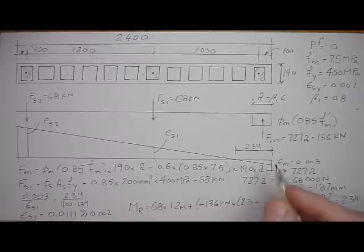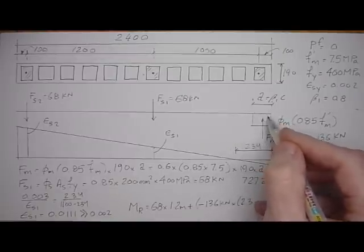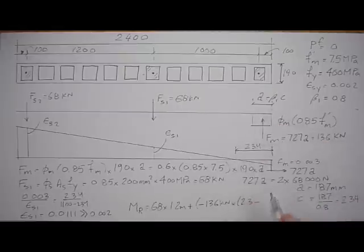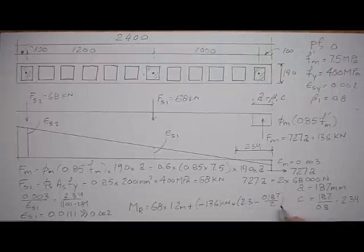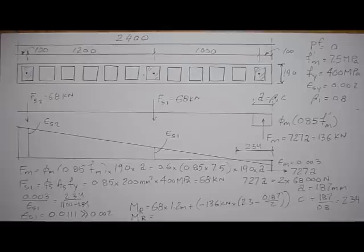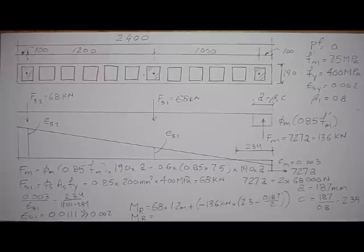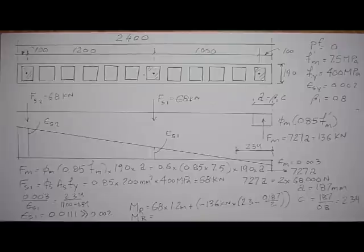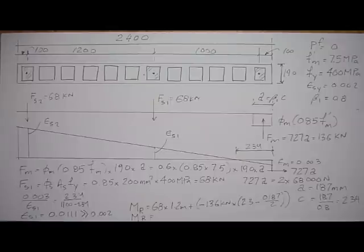So the moment resistance equals 68 × 1.2 minus 136 × (2.3 − 0.187/2), which gives a moment resistance of 218 kN·m.